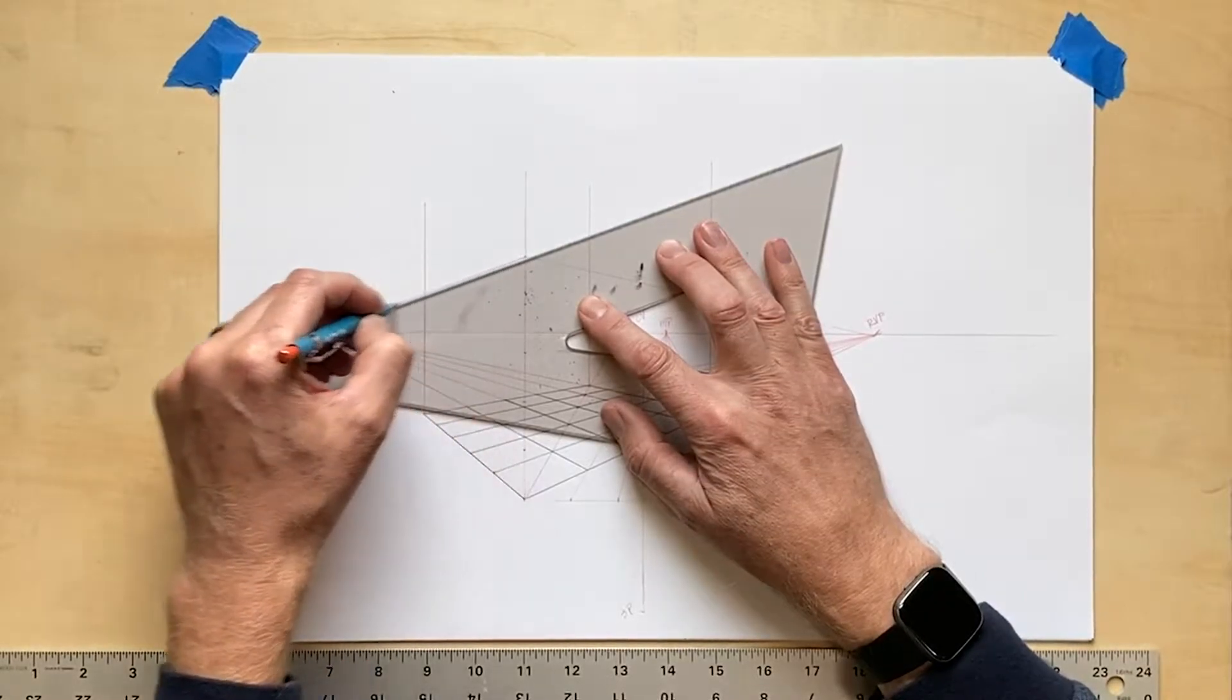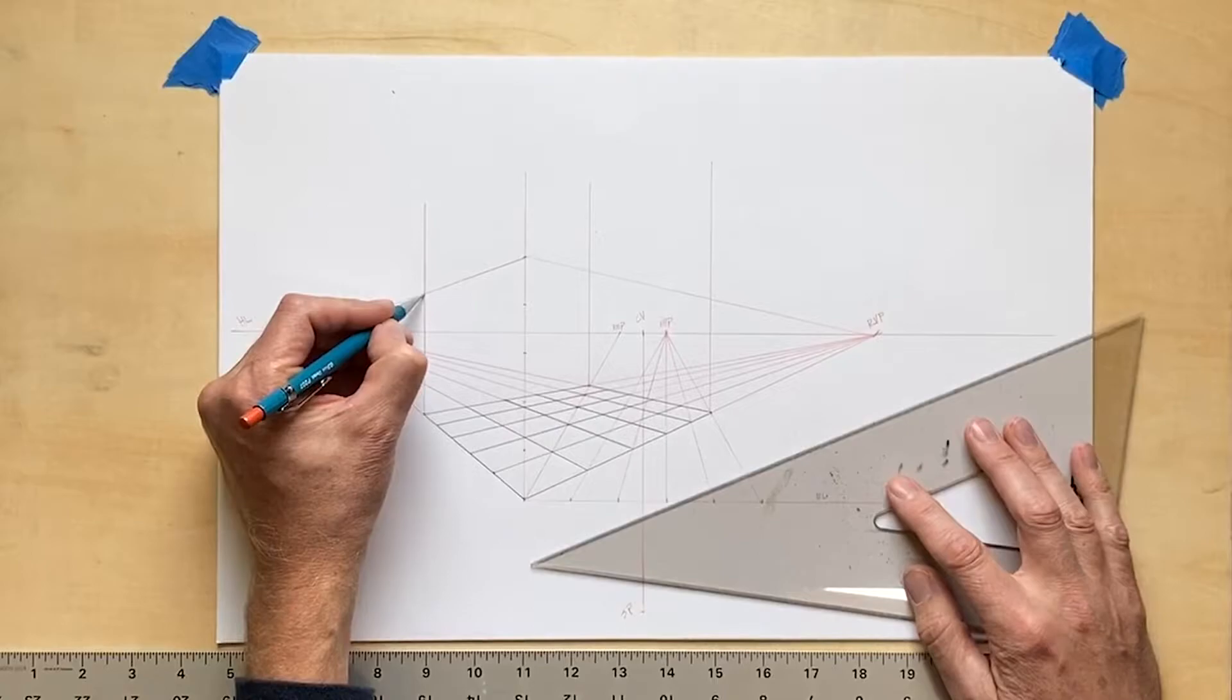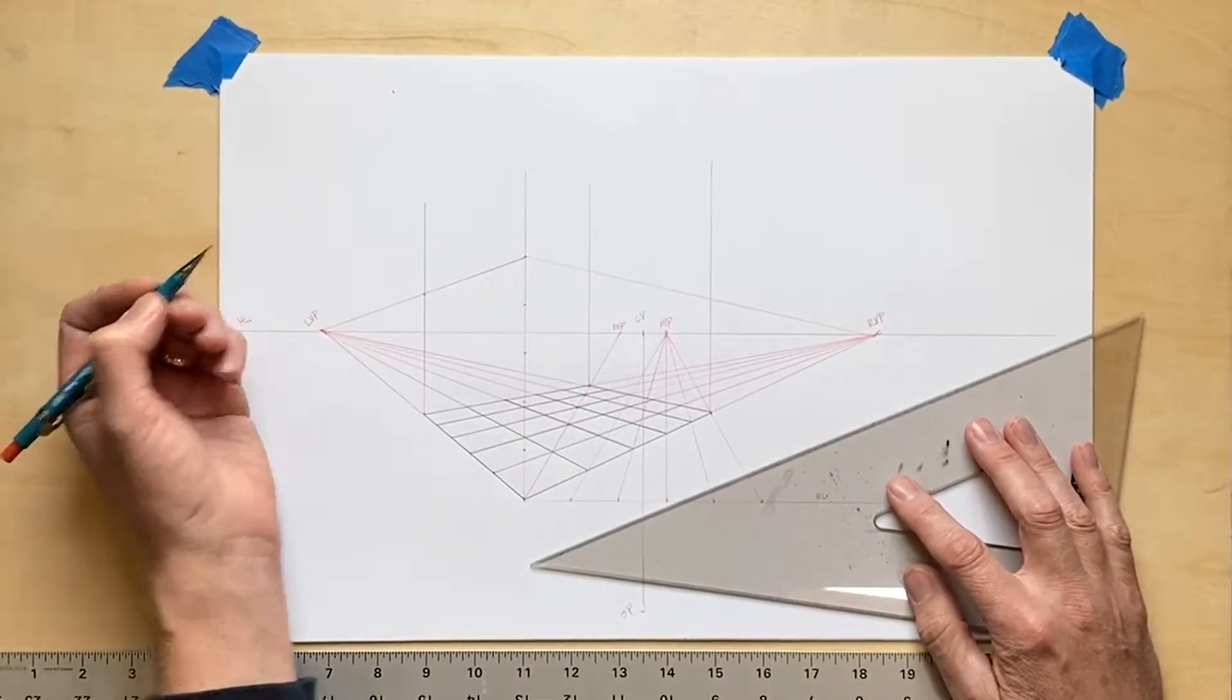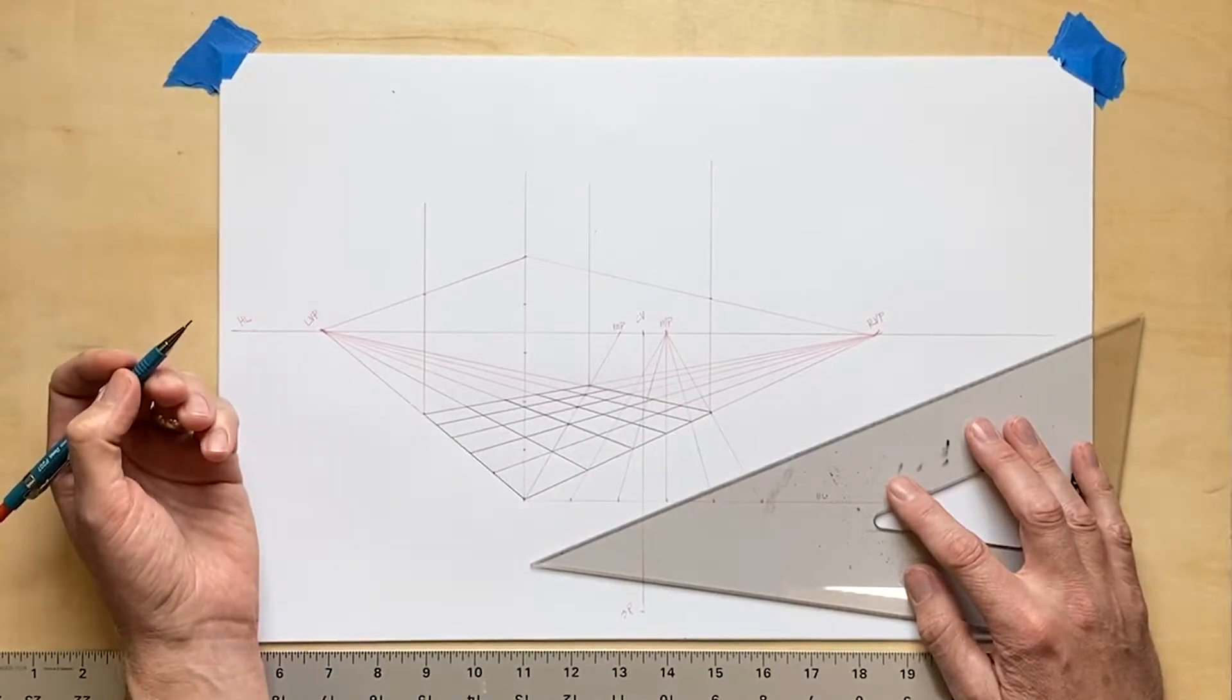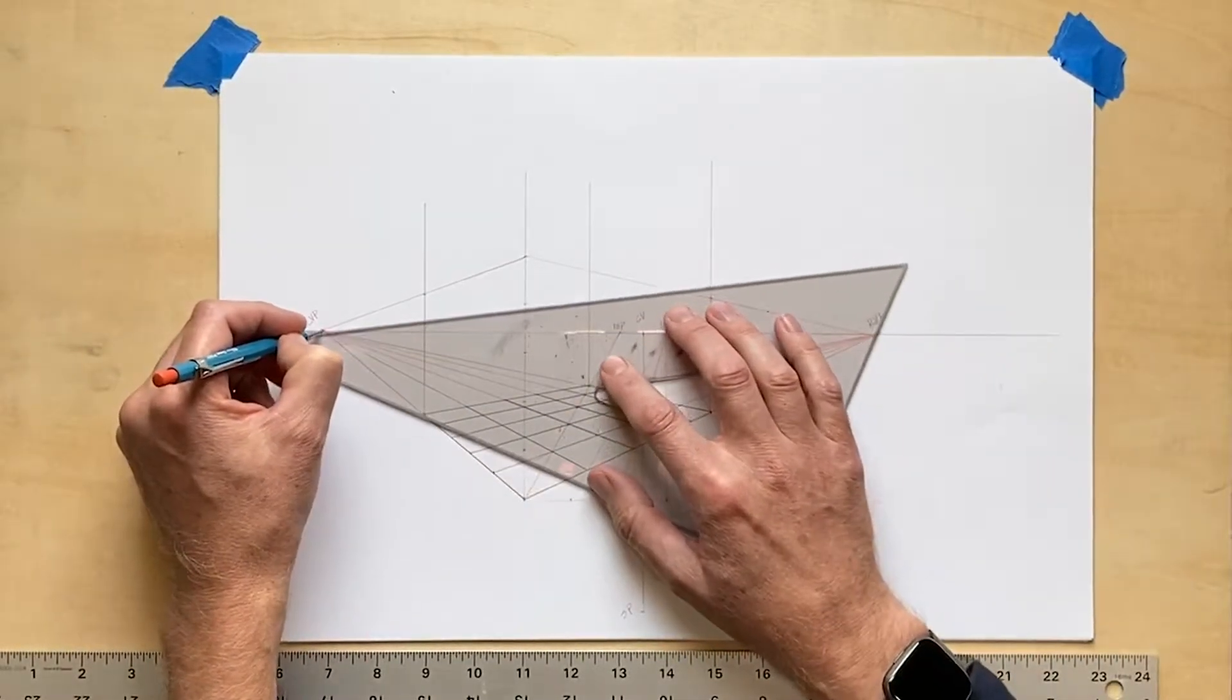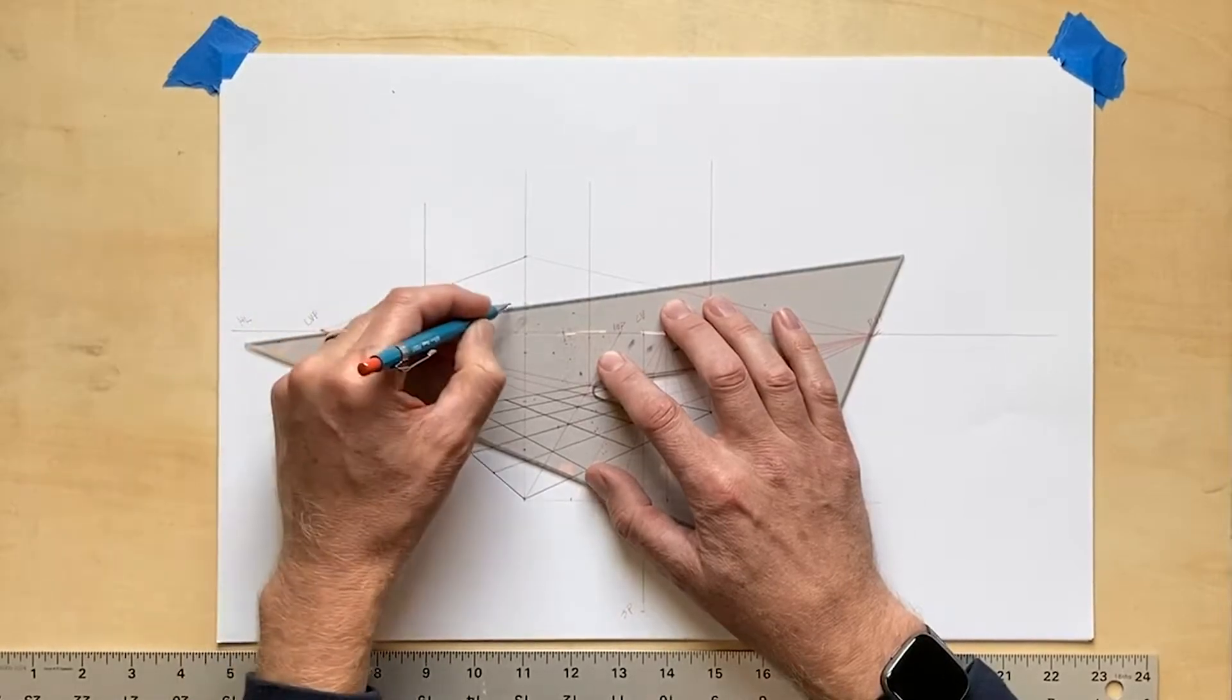I then will complete the horizontal measurements by connecting each of those measured points on that front edge to the vanishing points on the left and right side, and this will give me a set of five rows on each of the two front planes.